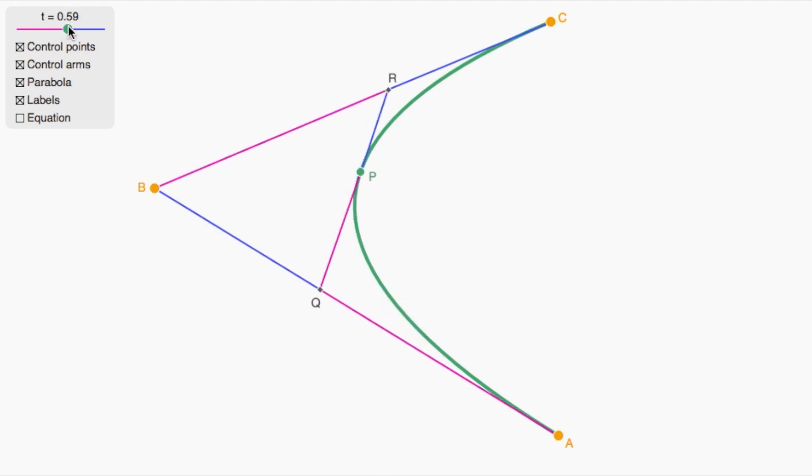Let's try one other value of t, say something around 0.7. So this point is 0.7 along the way. This point is 0.7 along the way. And again, it looks like the touching point is about that same ratio, about 0.7 along the way.